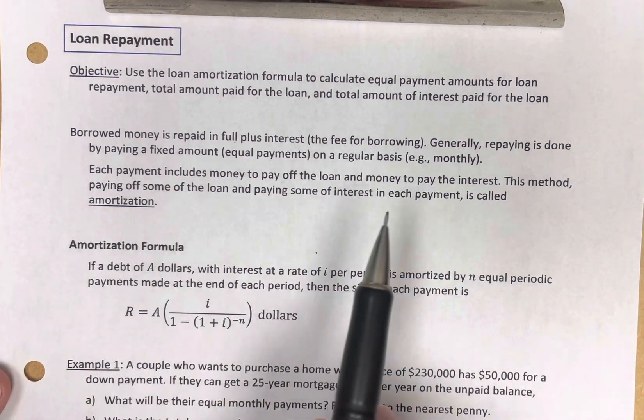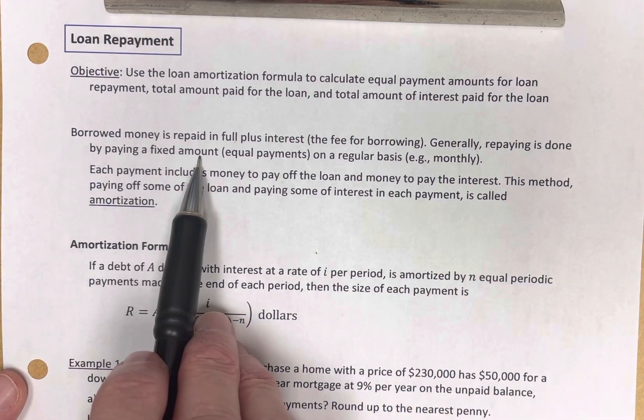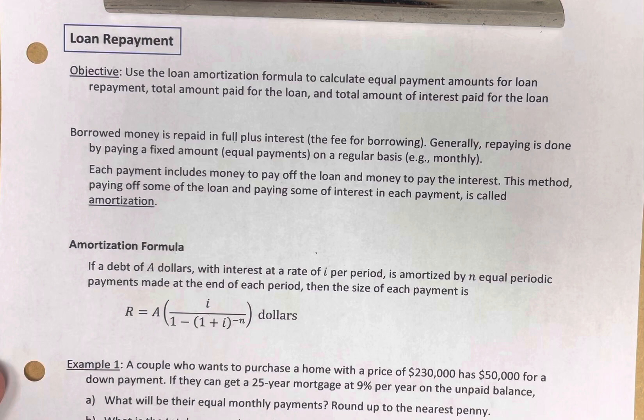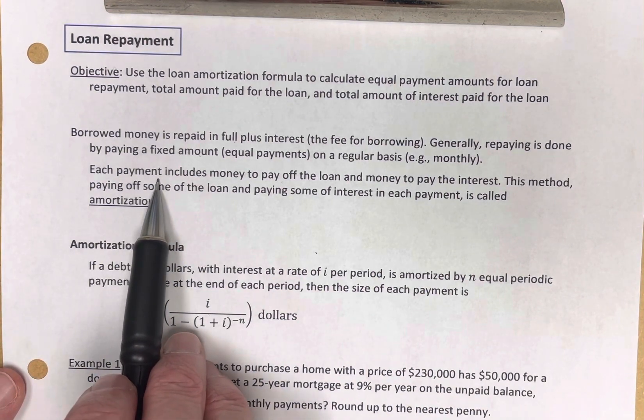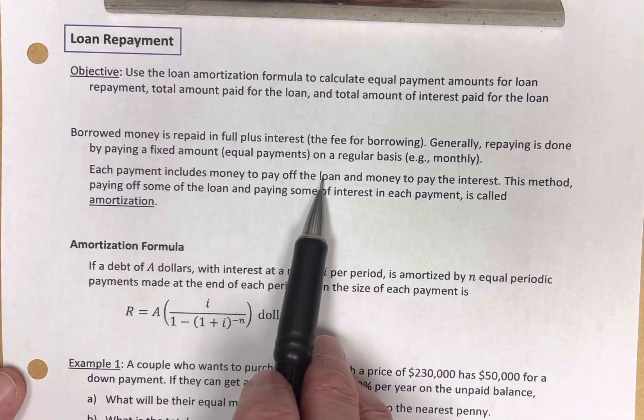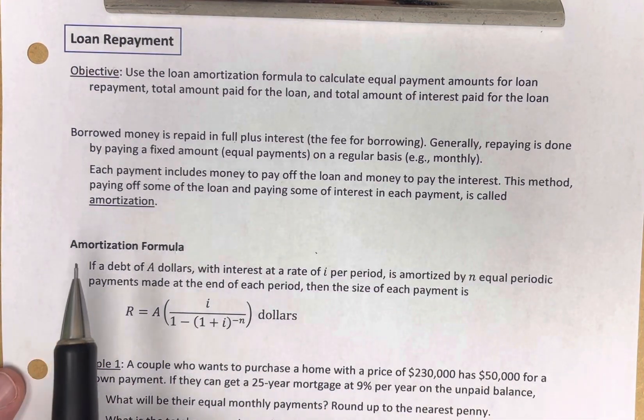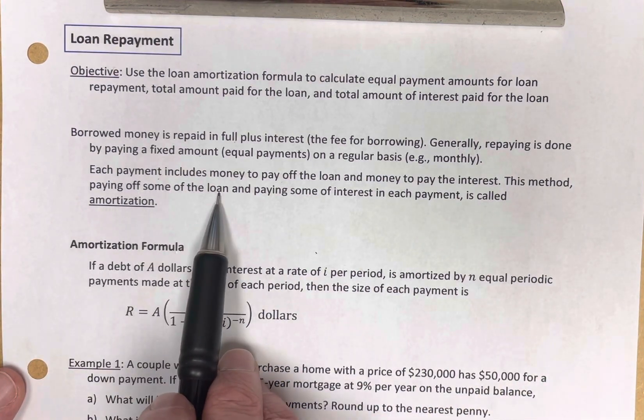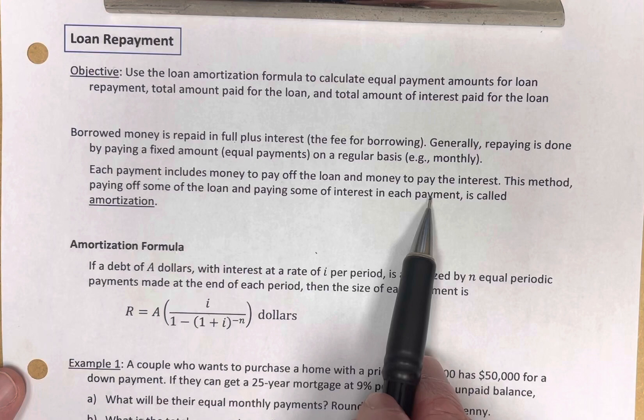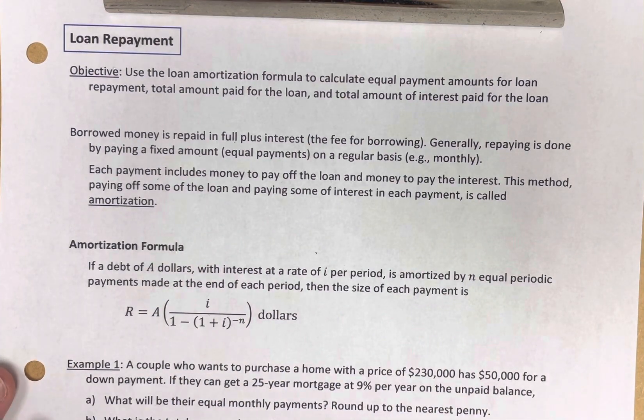So you borrow money for a car or a home, you will have equal payments every month until you pay it back. Each payment that you're making includes money to pay off the loan and money to pay the interest. And this method, in which you're paying off some of the loan and some of the interest in each payment, is called amortization. You've amortized the loan.